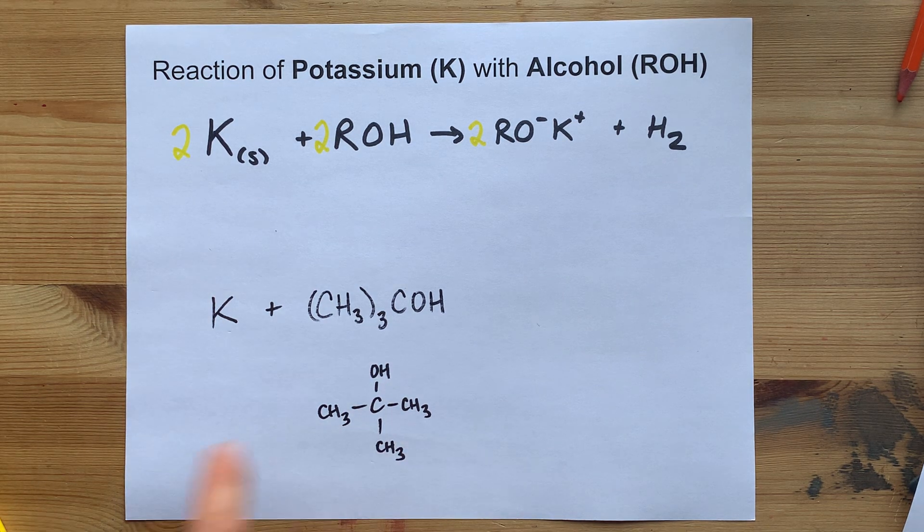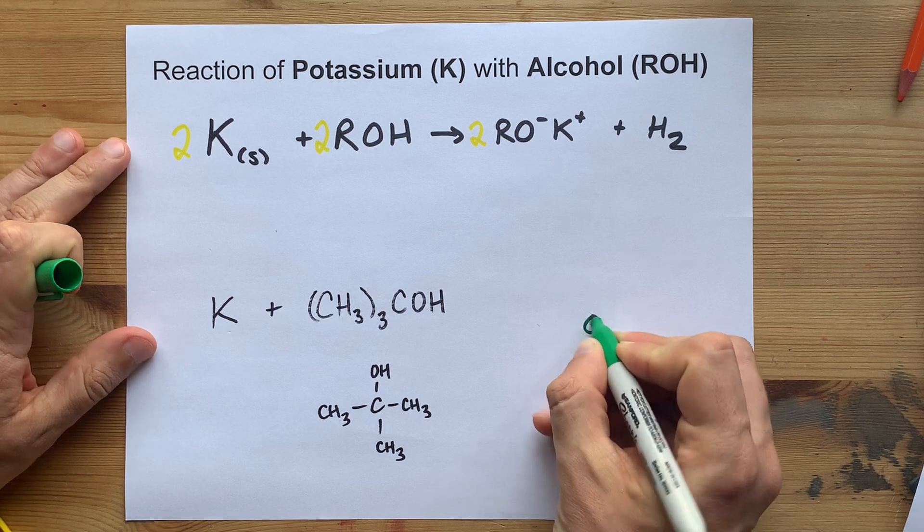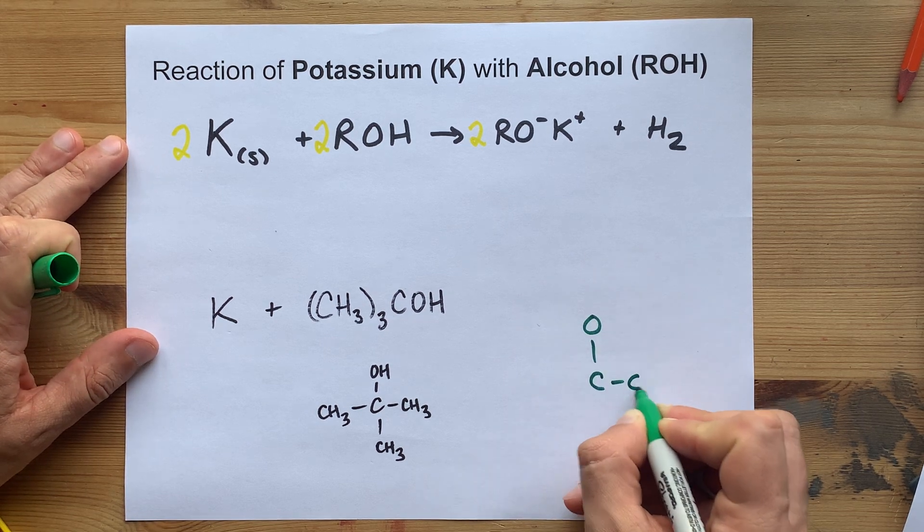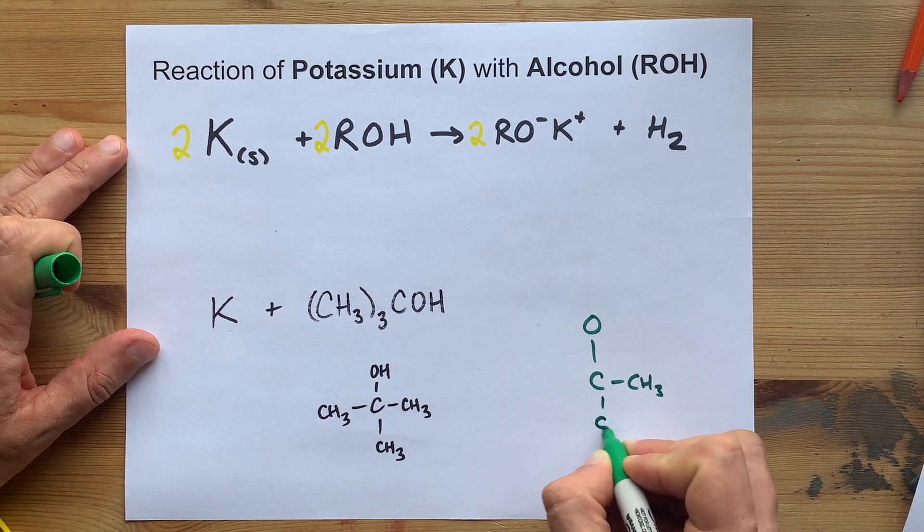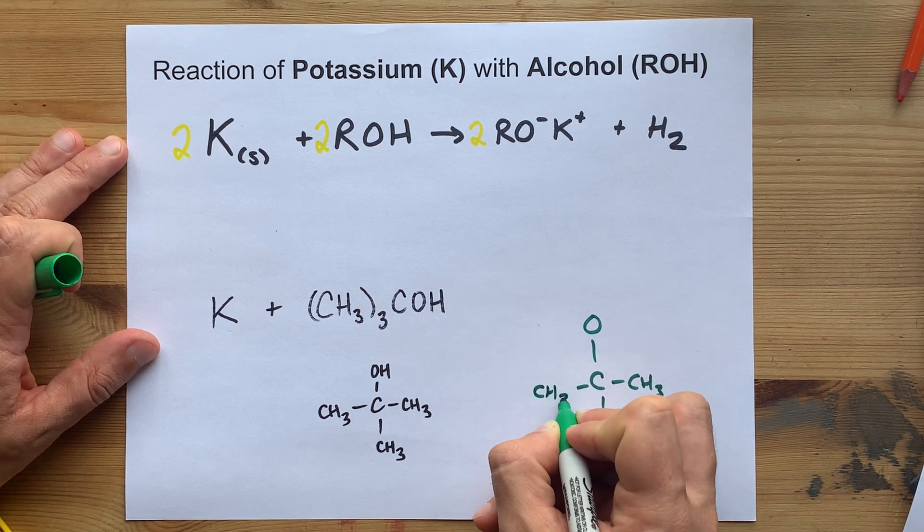Anyways, the potassium takes the place of the H. You end up with pretty much the same thing. CH-CH-CH, just gotta draw my CH3s.